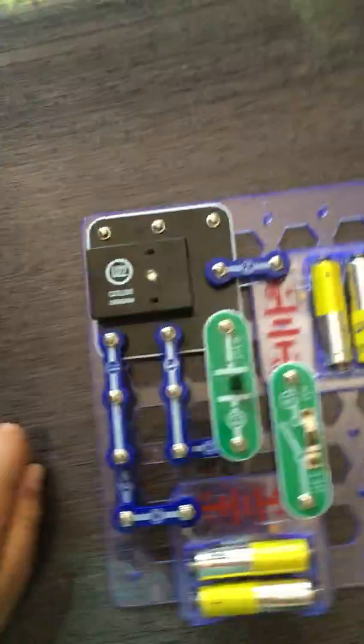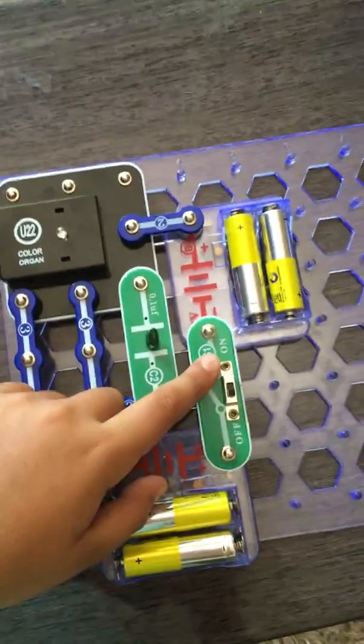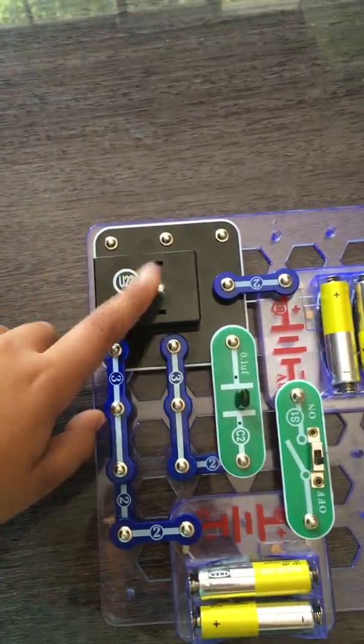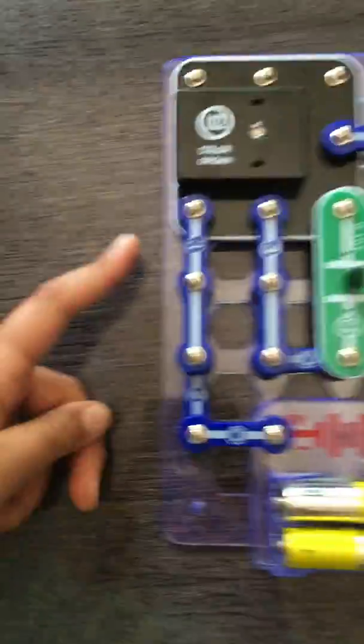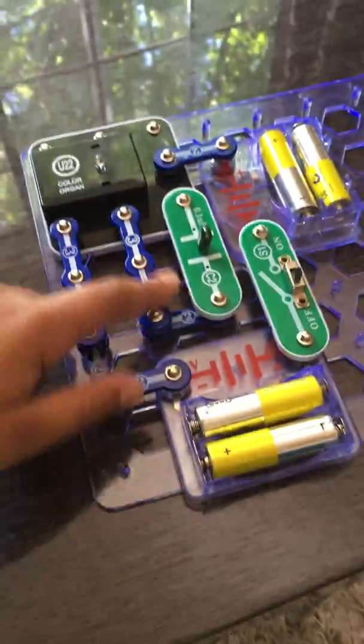So this is the project that I made. This is the color organ. Basically what happens when you switch on the light on the switch, then this lights up. It starts here at the color organ and these blue lines are sort of like wires.